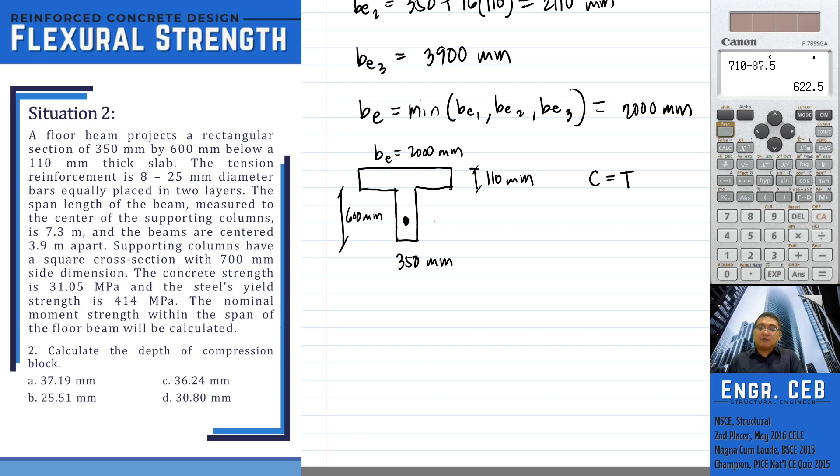So take note, the tensile force will come from 8 25mm diameter b-bars. So we have C is equal to 0.85 FC' A times B.